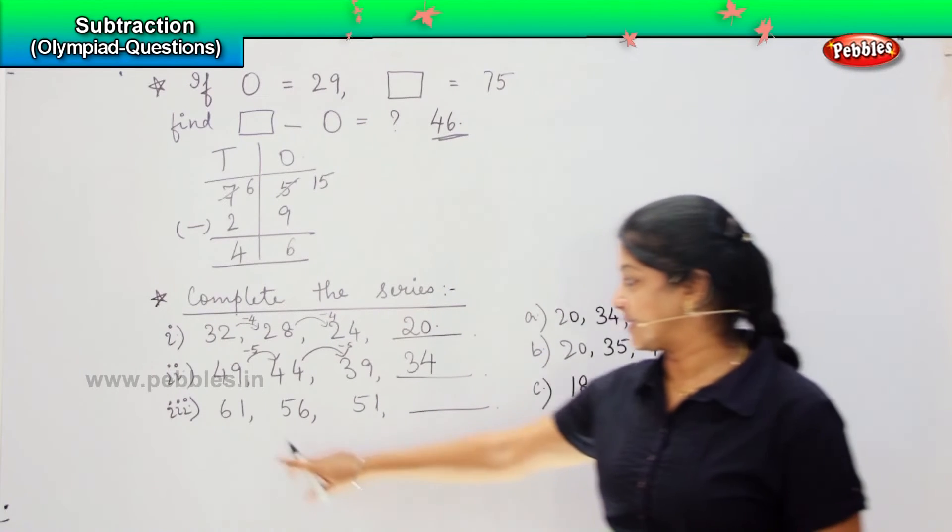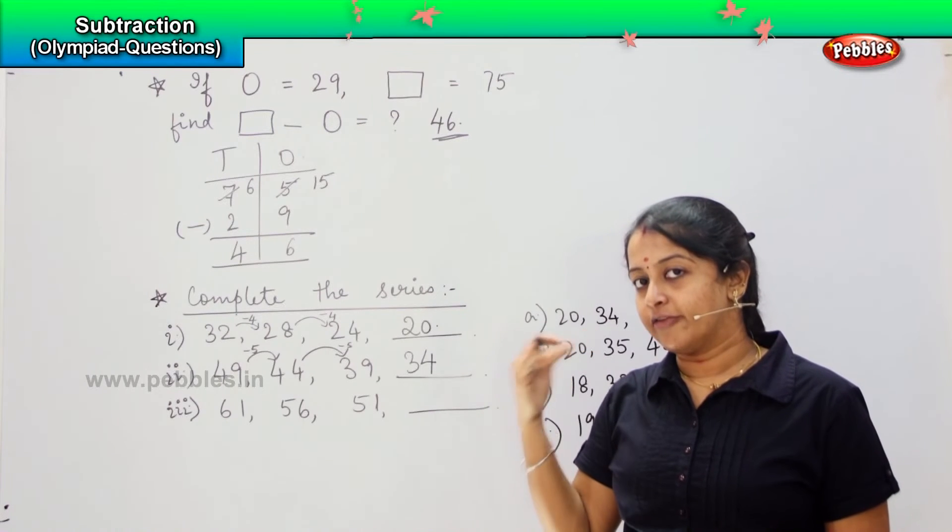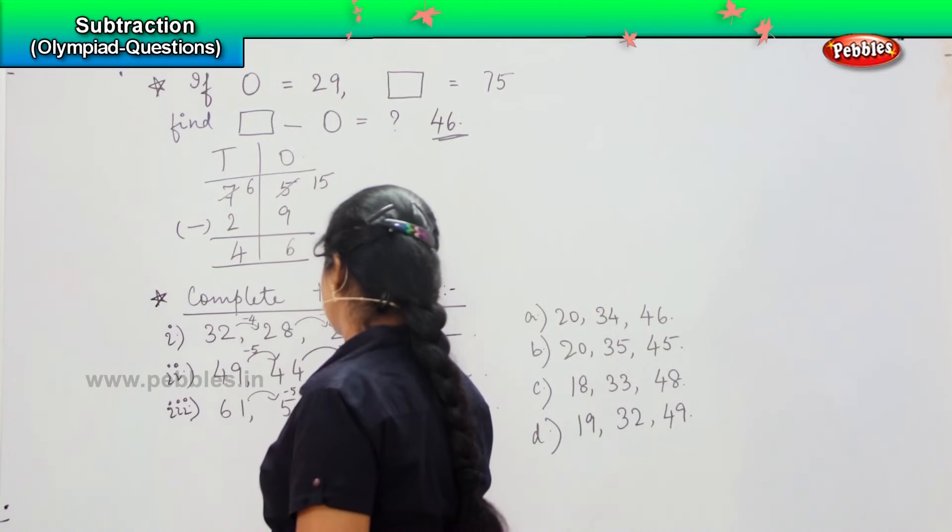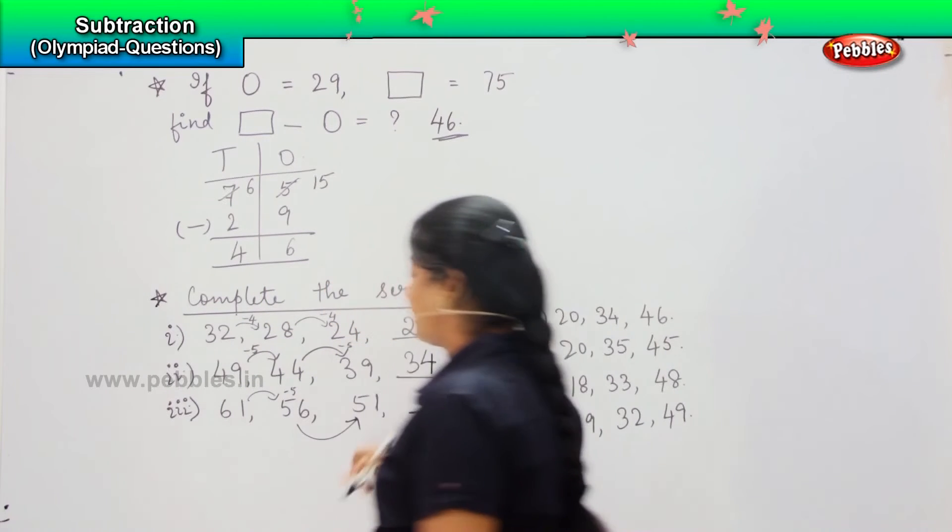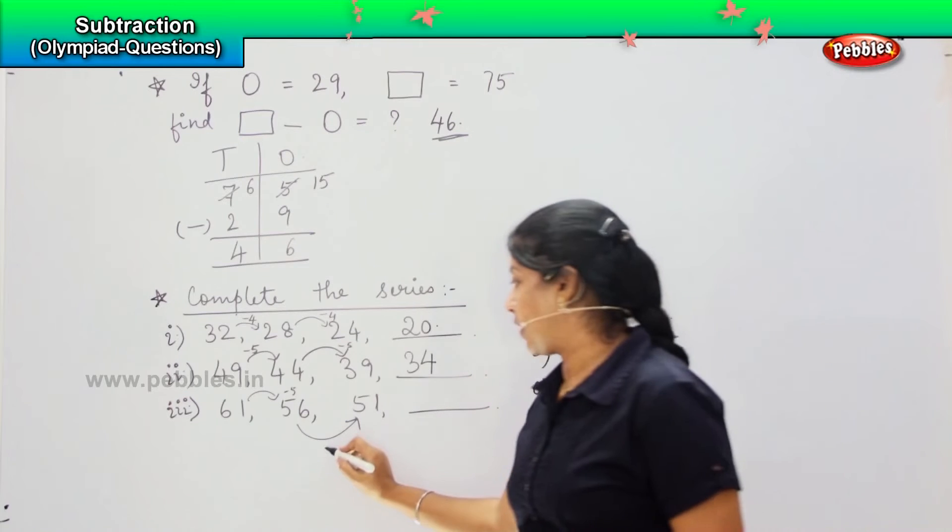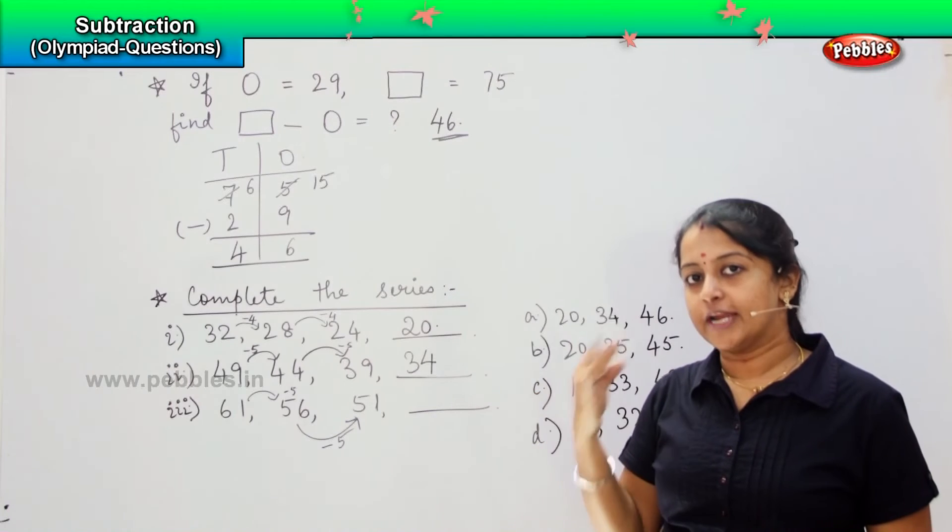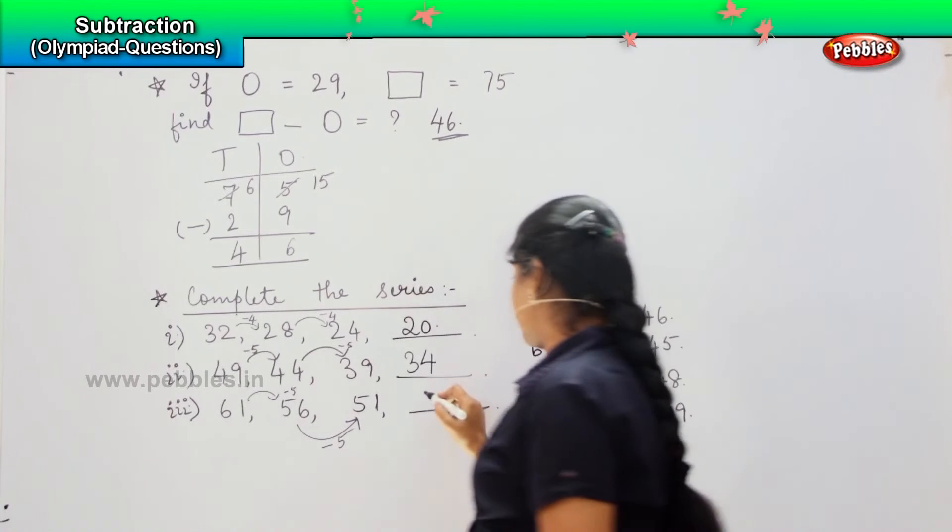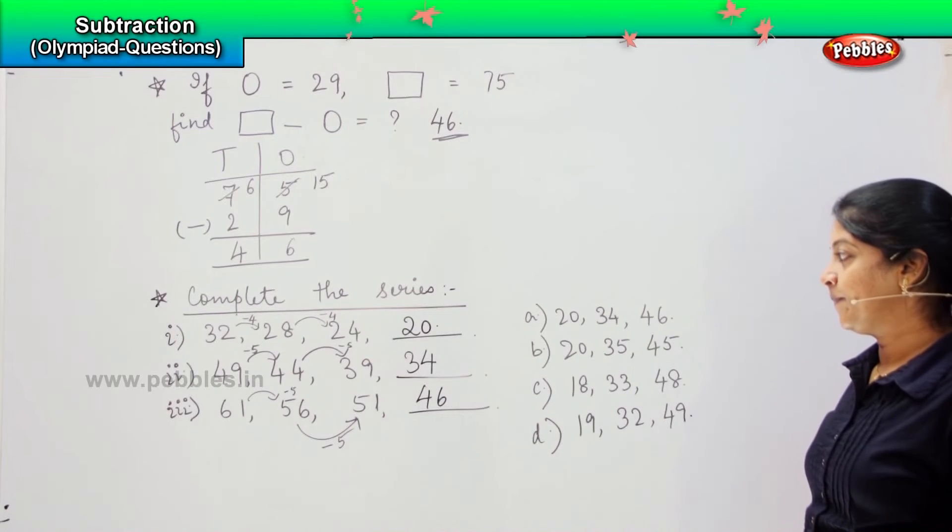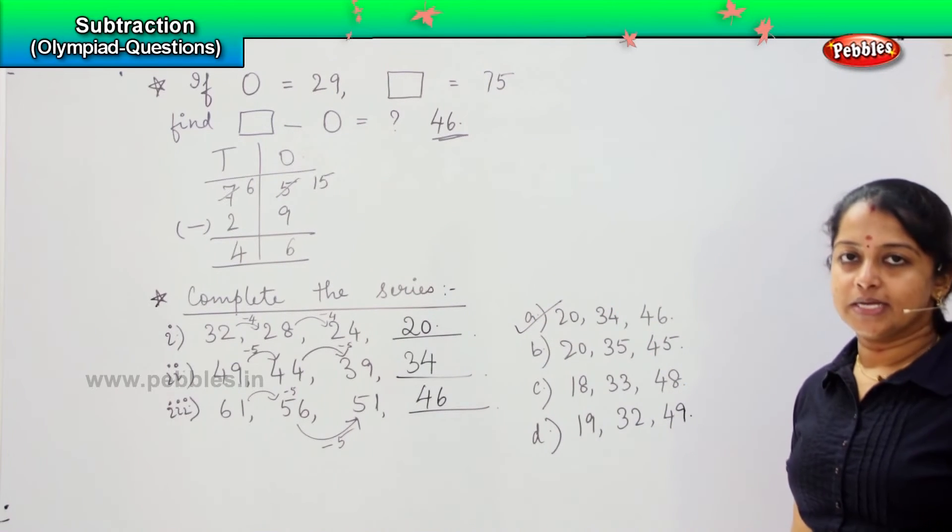Coming to the next one. 61 to 56, again minus 5. So from 56 to 51, minus 5. Then again, 50, 49, 48, 47, 46. So can we find this option anywhere children? Just see and tell me. Yes, it is option A. So A is my right answer.